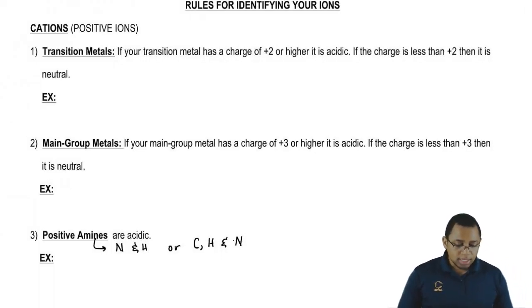Let's look over the first section. The rule says if your transition metal has a charge of plus 2 or higher, it's going to be acidic. We're going to say if the charge is less than plus 2, then it's going to be neutral. So let's think of an example here.